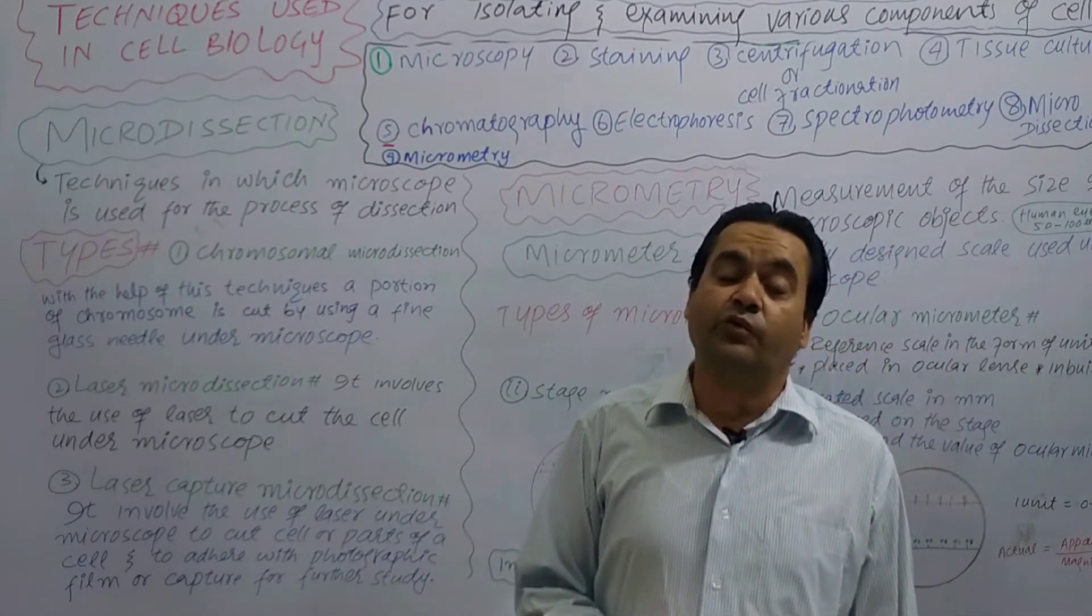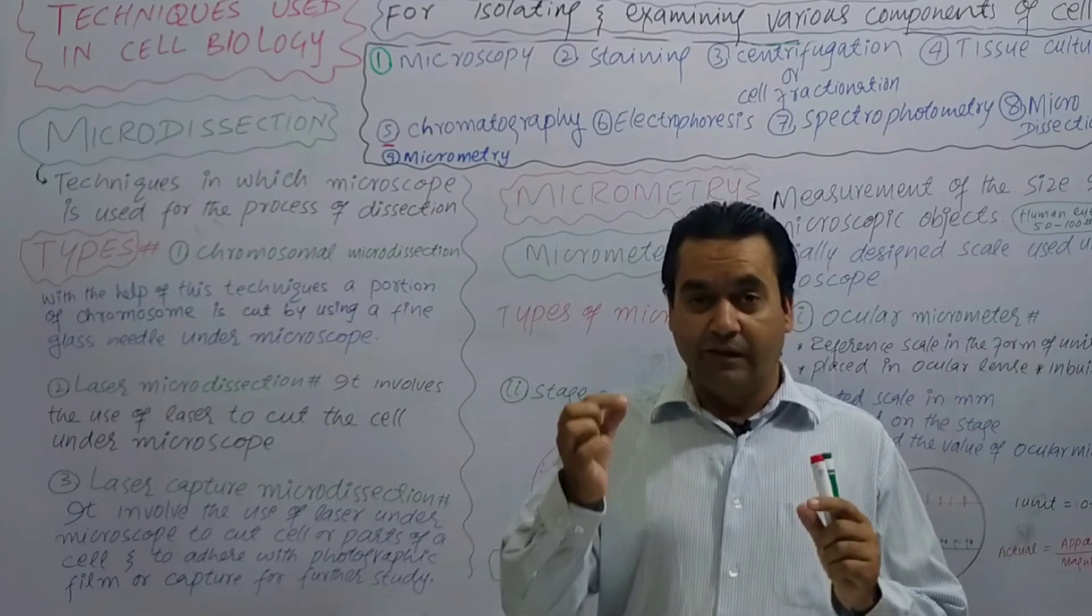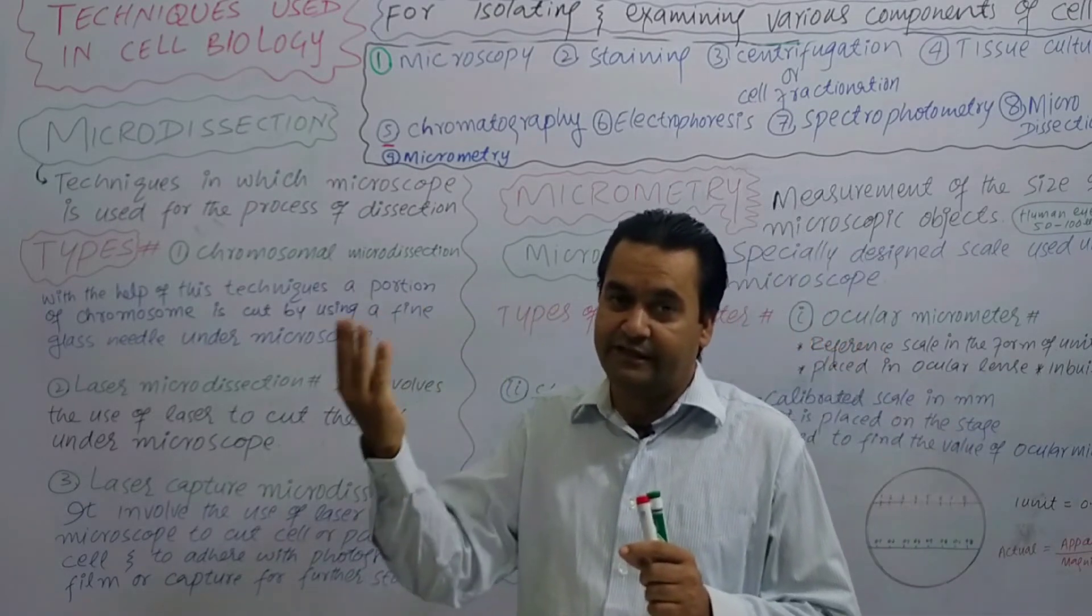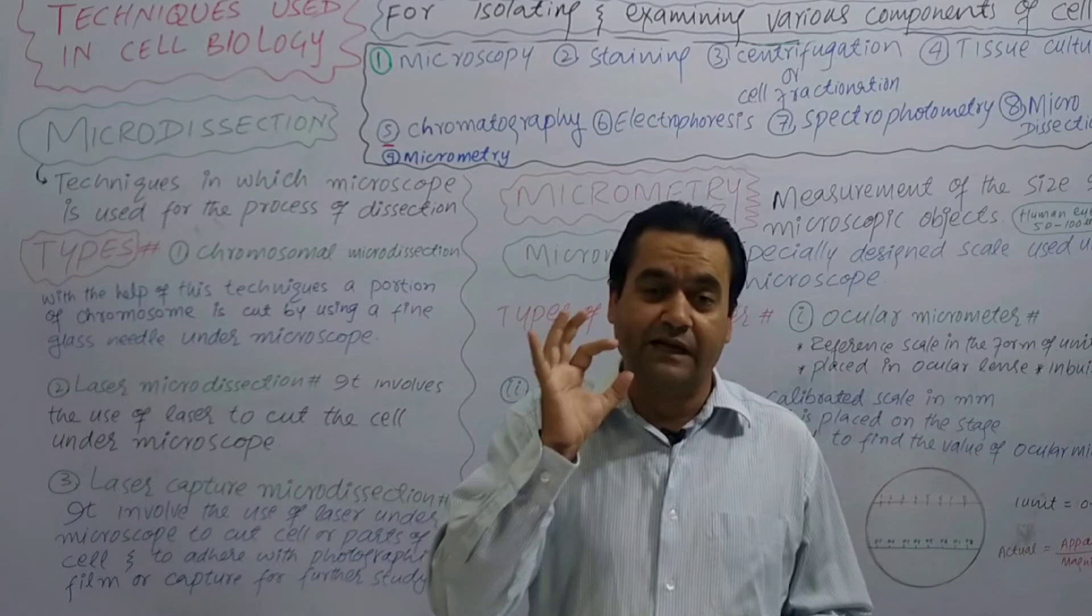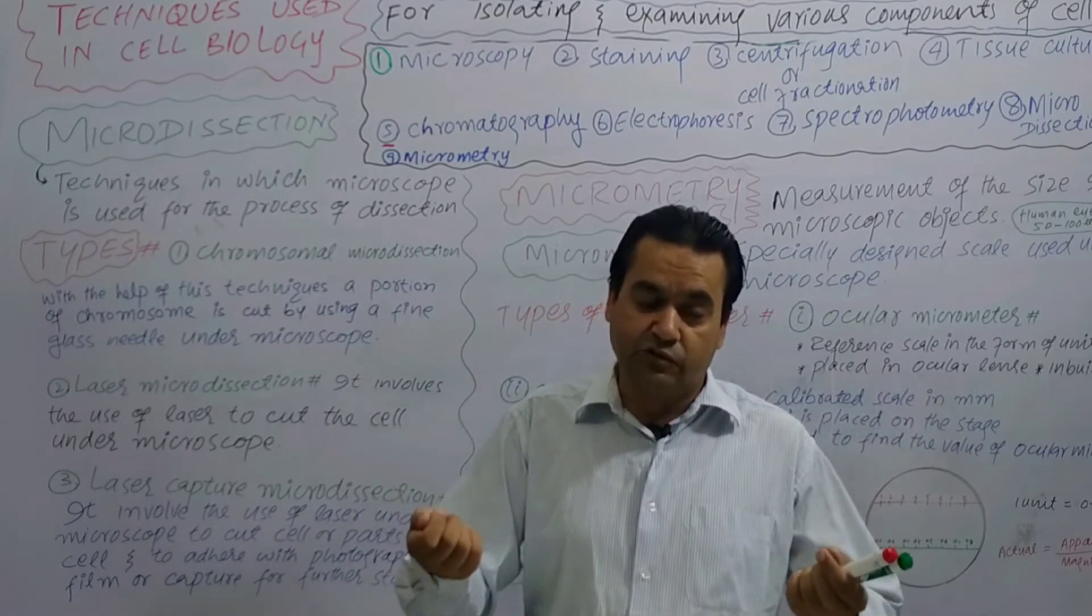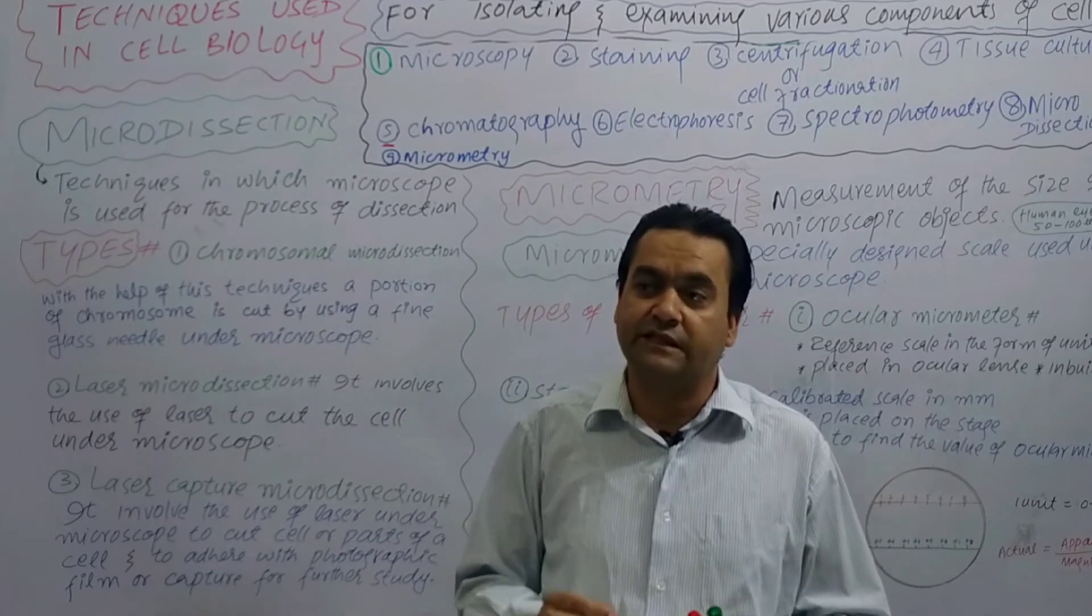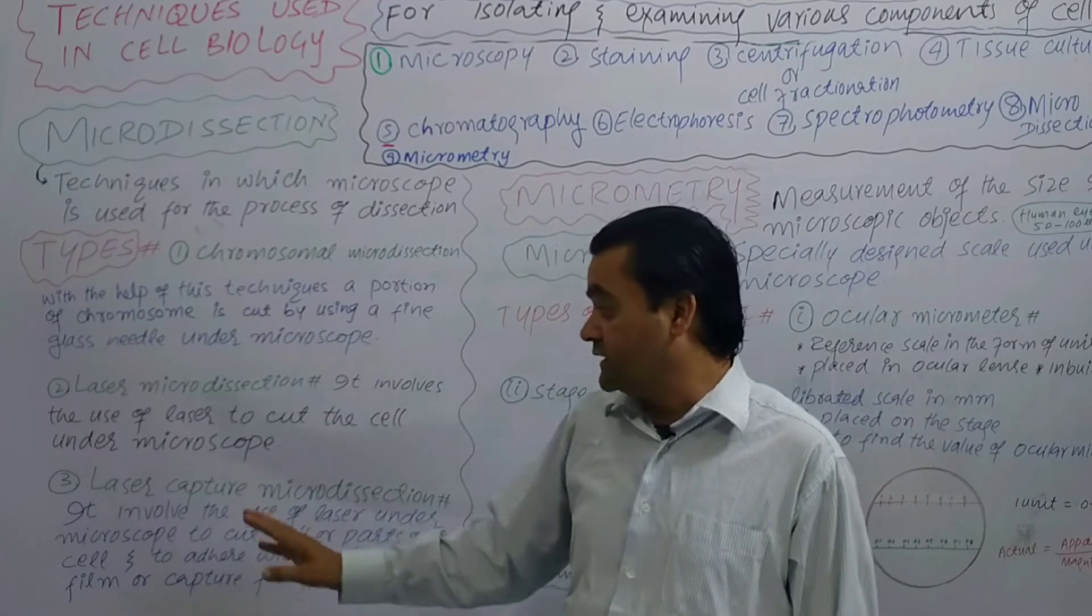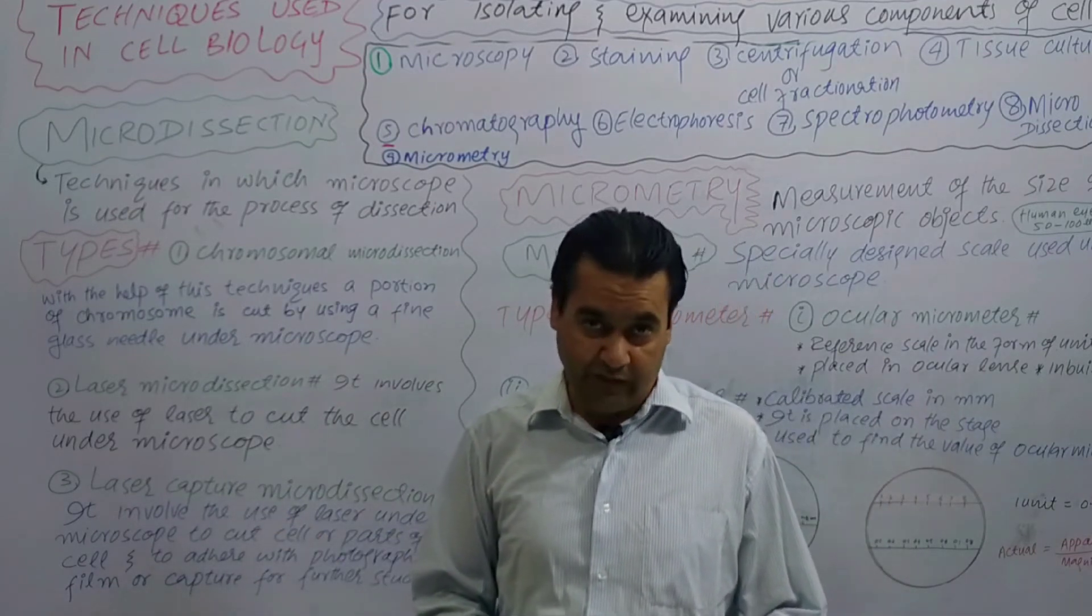The specimen on the glass slide, such as mitochondria or nucleus, is cut with laser and adhered to photographic film. This captures the specimen for further study.